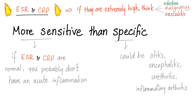ESR and CRP are more sensitive than specific. If ESR and CRP are normal, acute inflammation is very unlikely — that's the sensitivity. But they are not specific: high ESR and CRP could mean rheumatoid arthritis, otitis, encephalitis, urethritis, inflammatory arthritis, bronchitis, pneumonia, pleurisy, endocarditis, myocarditis, pericarditis, pancarditis — whatever.